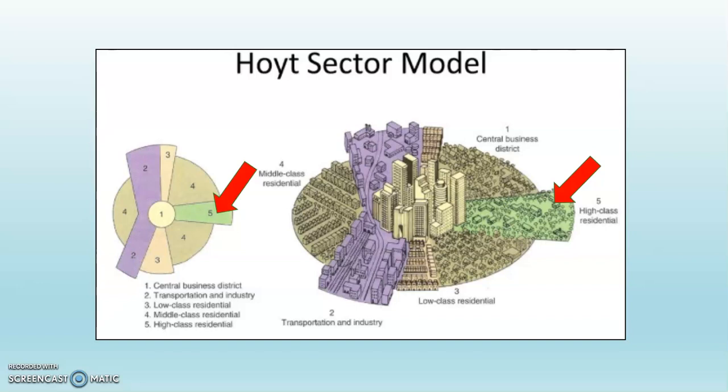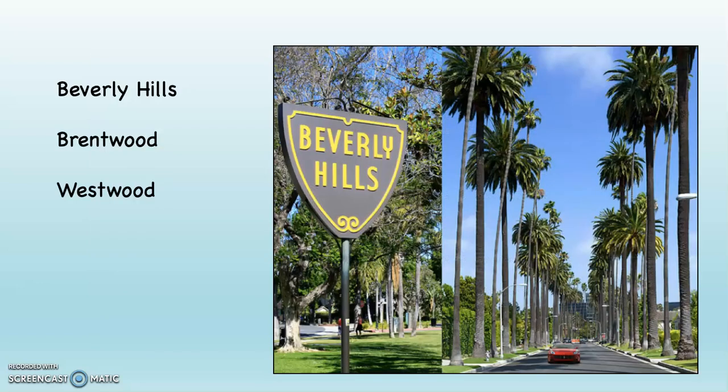Notice that all of these urban components touch the CBD — this is a primary characteristic of the sector model. If we look at the high-class residential, you might ask, is there anything like that? Well, yes. Beverly Hills, Brentwood, and Westwood all kind of stretch out and get very close to downtown Los Angeles. These are famous, very wealthy places with lots of space, high property values, and people who overwhelmingly have quite a lot of money.